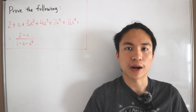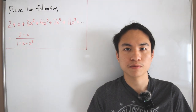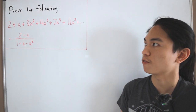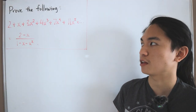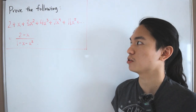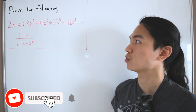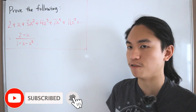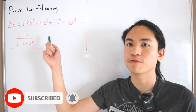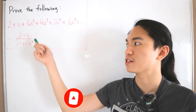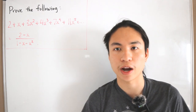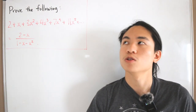Welcome back to another video. Here we want to verify the following expression: 2 plus x plus 3x squared plus 4x cubed plus 7x to the fourth plus 11x to the fifth, and so on, is equal to the function (2 minus x) divided by (1 minus x minus x squared).